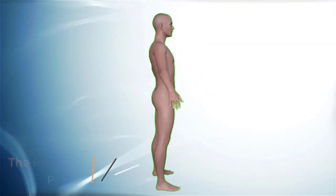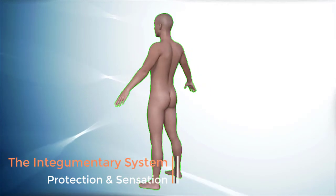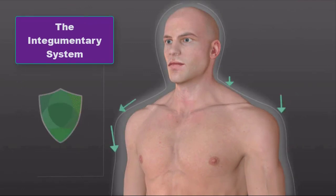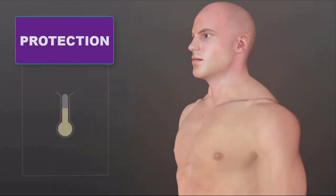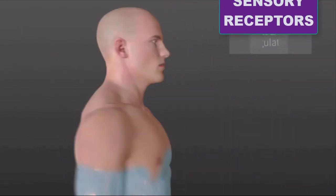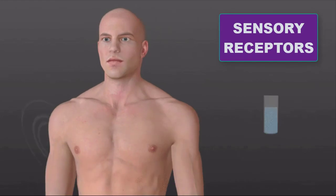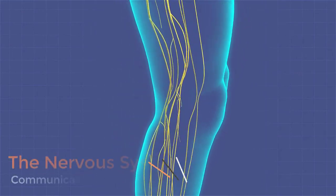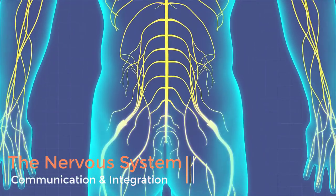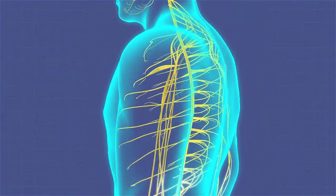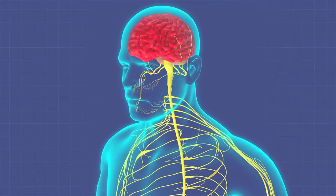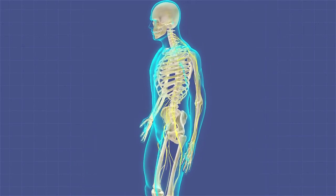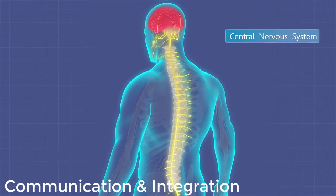The integumentary system includes the skin, hair, nails, and exocrine glands. It forms the external body covering, protects deeper tissues from injury, and houses important touch, pain, and temperature receptors, along with sweat glands and oil glands. The nervous system allows for fast, specific communication between the body and the brain. Both conscious and unconscious sensory information is gathered about the state of our external and internal environments and sent to the central nervous system for processing.